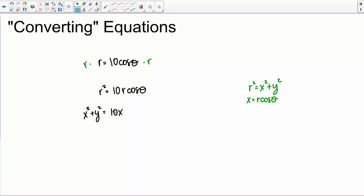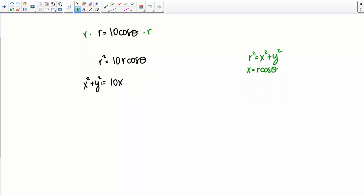Okay, this is good, I have everything in terms of X and Y now, but I don't really quite recognize what this is. So let's try to work with this a little bit, and get it in a form that we're more familiar with. So I'm going to start by moving everything to one side of the equal sign, and we'll write this as X squared minus 10 X plus Y squared equals zero.